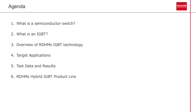The agenda for today has six main topics. First, what is a semiconductor switch? Second, what is an IGBT? Third, an overview of Roam's IGBT technology. Fourth, applications for Hybrid IGBTs. Fifth, we will review test data and results. And finally, we will review Roam's Hybrid IGBT product line.